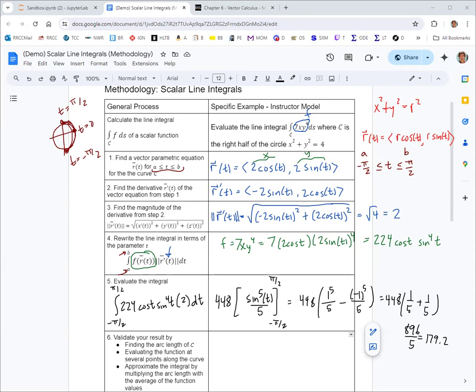And so your final result here is 896 over 5, which as a decimal is 179.2. That is our result there. And we've got a couple options for validation that we can go through.